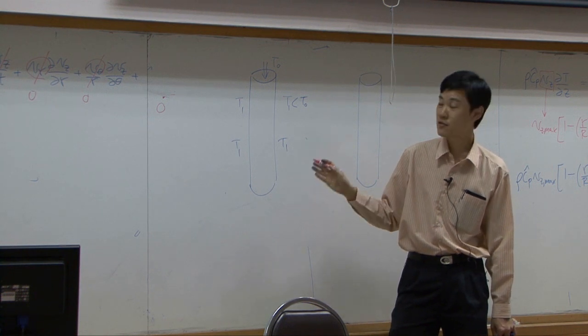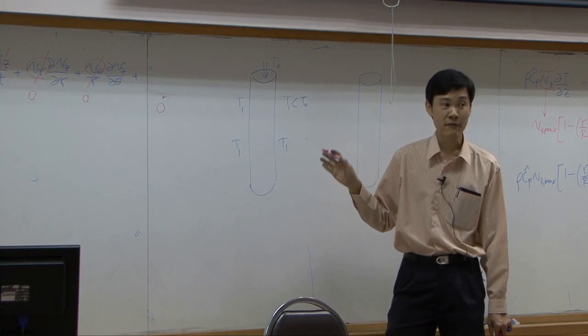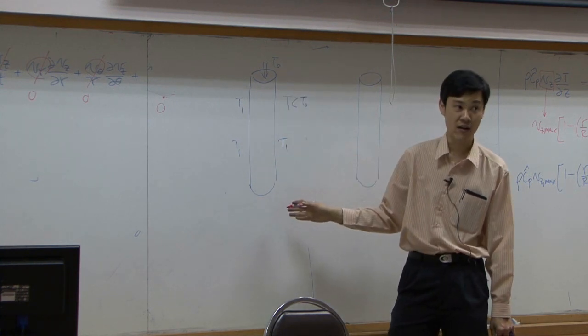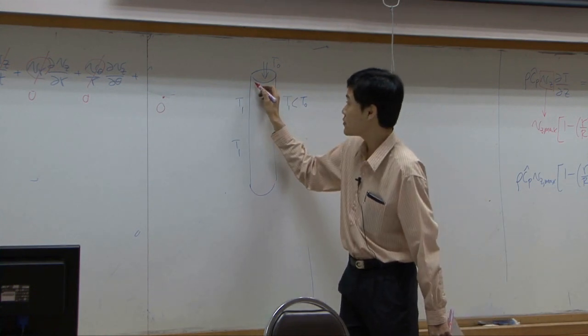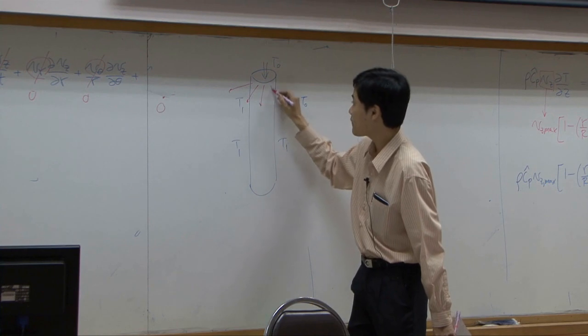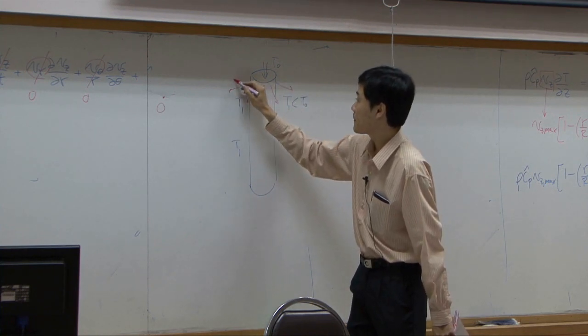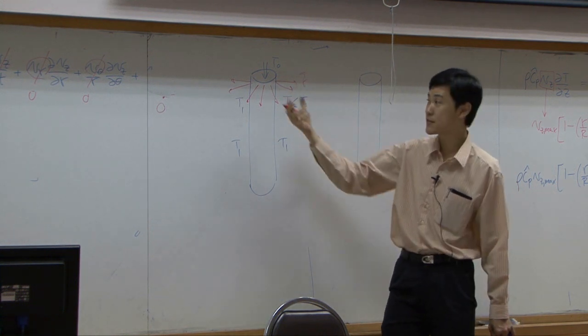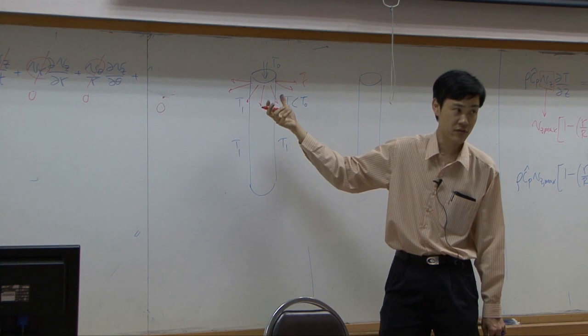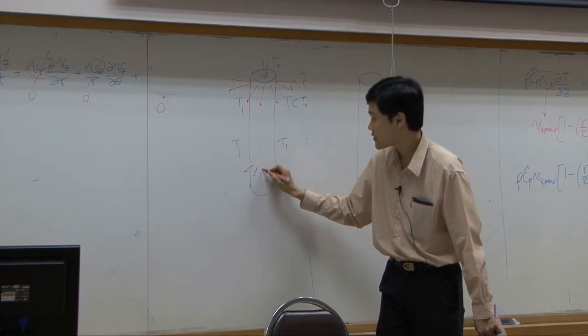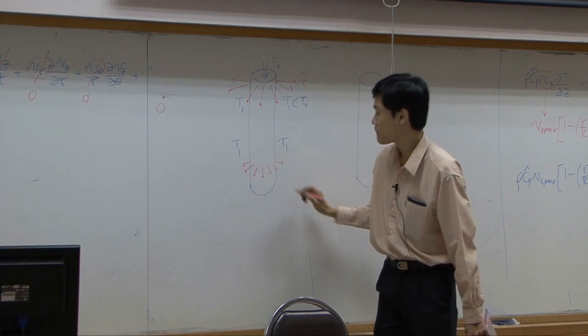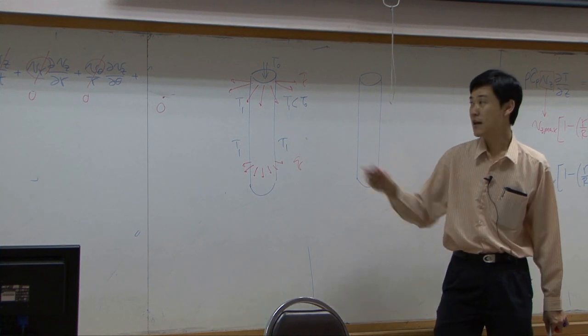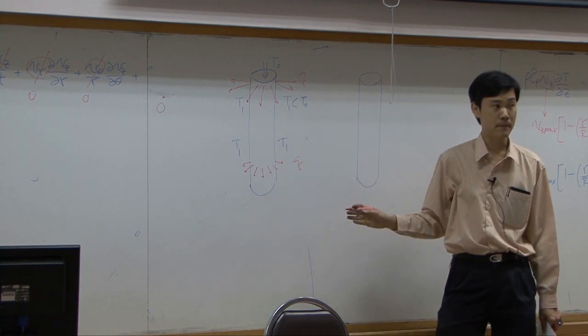In other words, temperature gradient or driving force for conduction in R direction reduces as the pipe is longer and longer. So if you look into conduction or the heat transfer, out here the flux is high because temperature difference is large. Down here the flux is lower. So Q here and Q there are not equal and flux is lower and lower along the way.